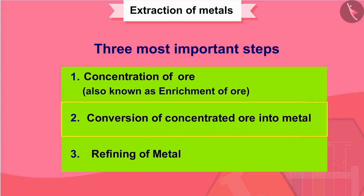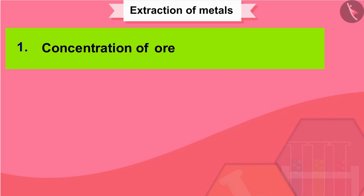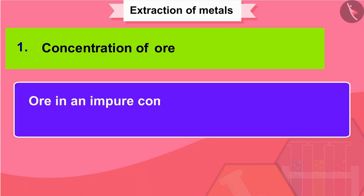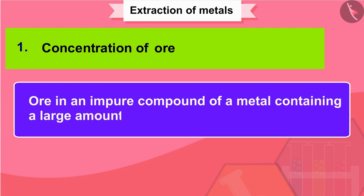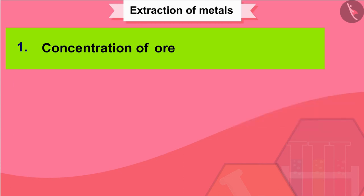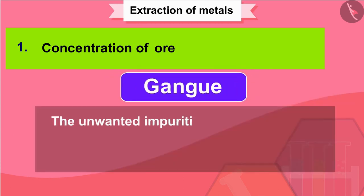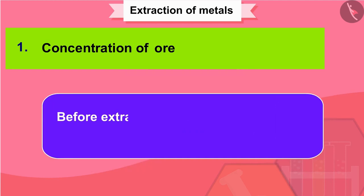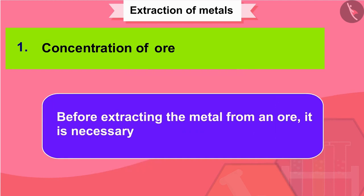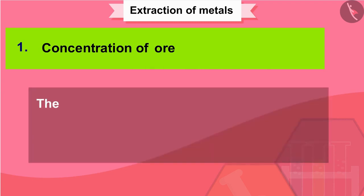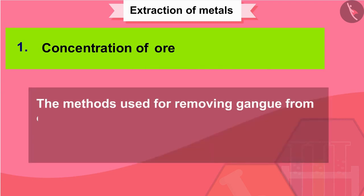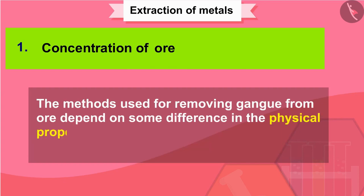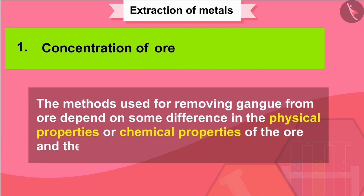We will now discuss each of these steps one by one. Concentration of ore: ore is an impure compound of a metal containing a large amount of sand and rocky material. The unwanted impurities like sand, rocky materials, limestone, mica, etc., present in an ore are called gangue. Before extracting the metal from an ore, it is necessary to remove these impurities. The methods used for removing gangue from ore depend on some difference in the physical or chemical properties of the ore and the gangue.